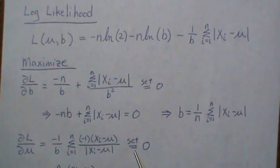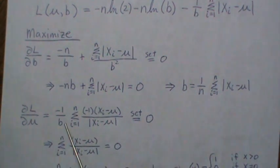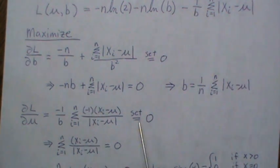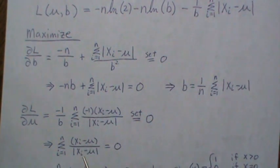We set it equal to 0, and then we multiply this to the other side, we multiply that minus 1 to the other side, and we're left with this.